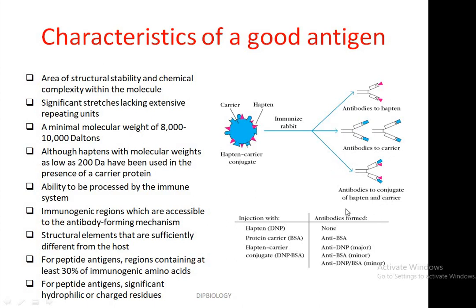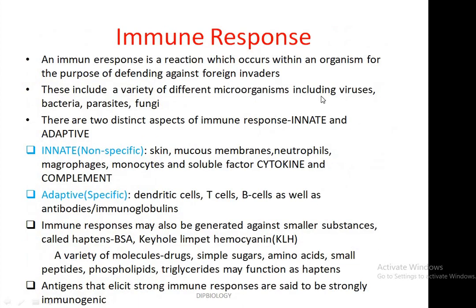There are antibodies to conjugates of hapten-carrier molecules. Some different types of haptens are available, and when they conjugate with DNP or DSA they form hapten-carrier conjugates. If haptens are alone, they do not produce antibodies. When haptens are combined with BSA, it produces anti-BSA, and then when a hapten-carrier conjugate is injected, it produces anti-DNP as the major response and anti-BSA as a minor response.